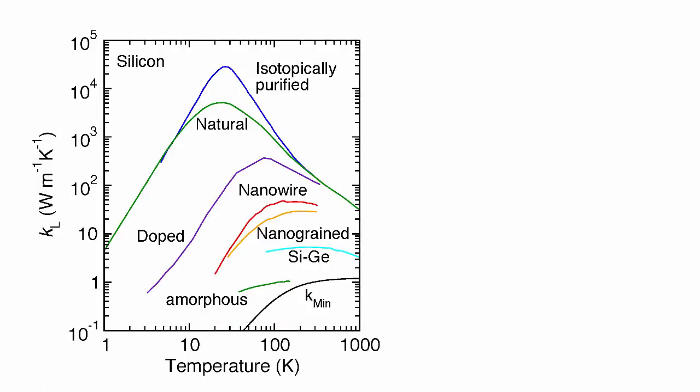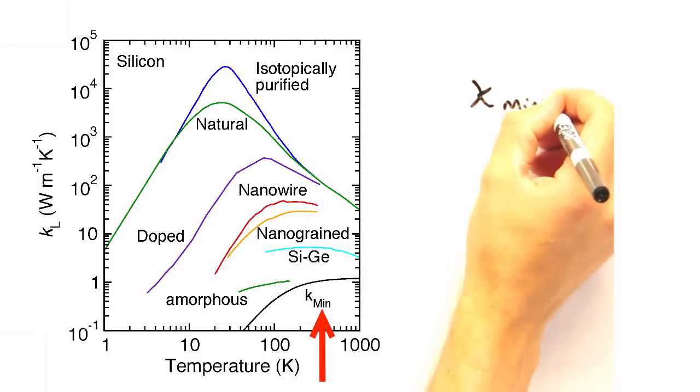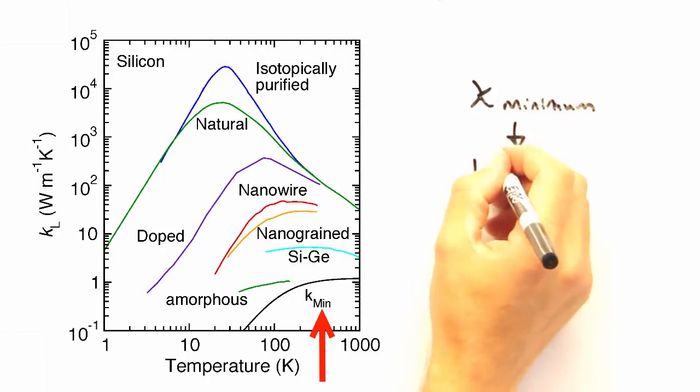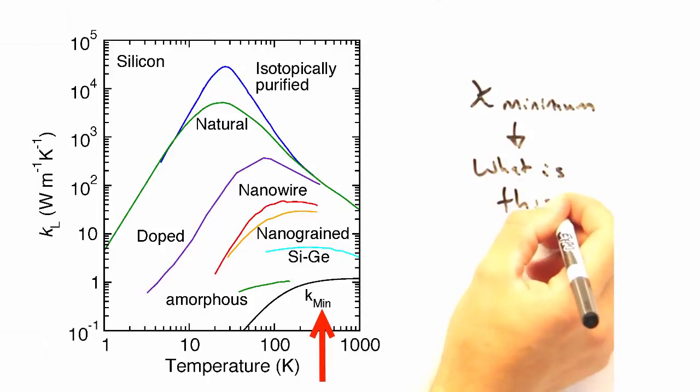All right, I think that about does it for this graph, and wraps up thermal conductivity and phonons really nicely, with the exception of one question to ponder at home. At the bottom of this graph, there's a region where kappa has what we would call a minimum value. If you were going to develop an expression for minimum thermal conductivity, what would you put in it?